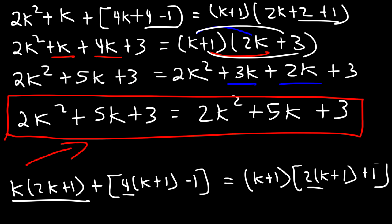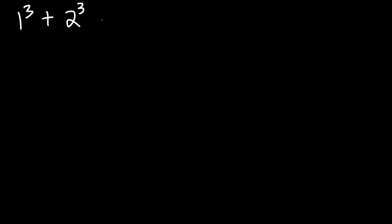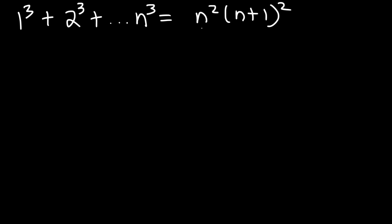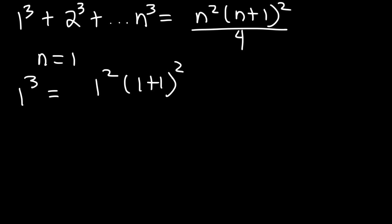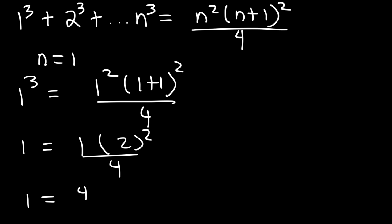Now let's try another example. Let's say that 1 to the 3rd plus 2 to the 3rd and then up to n cubed is equal to n squared times n plus 1 squared divided by 4. So let's show that it's true for n equals 1. So 1 to the 3rd is going to equal 1 squared times 1 plus 1 squared over 4. Let's see: 1 to the 3rd is 1. 1 squared is 1. 1 plus 1 is 2. 2 squared is 4. 4 divided by 4 is 1. So it's true for n equals 1.